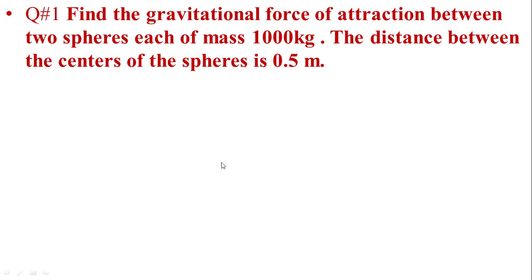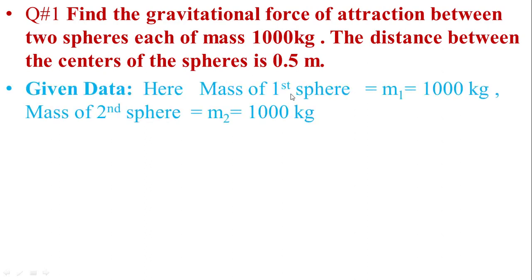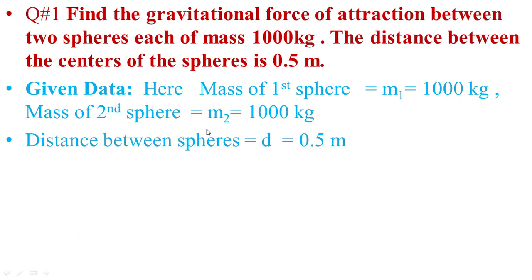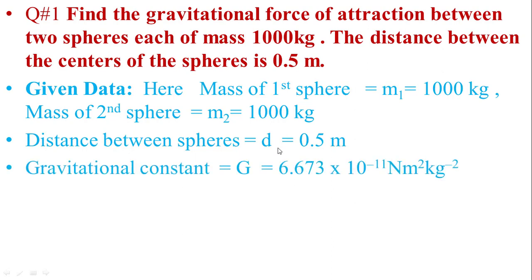Here we can see that two spheres each of mass 1,000 kg. Now we write the given data: mass of first sphere M1 is equal to 1,000 kg and mass of second sphere M2 is 1,000 kg. The distance between spheres D is equal to 0.5 meters. Gravitational constant capital G is equal to 6.673 multiplied by 10 to the power minus 11 Newton meter square per kg square.